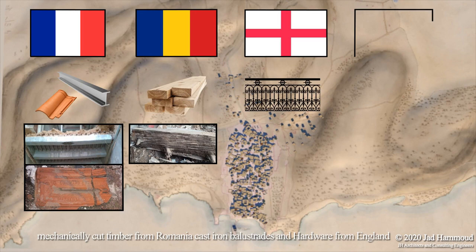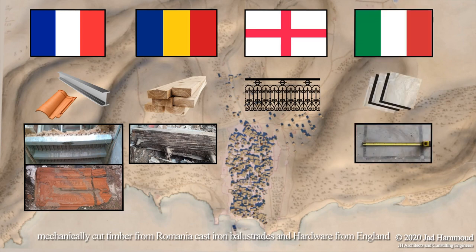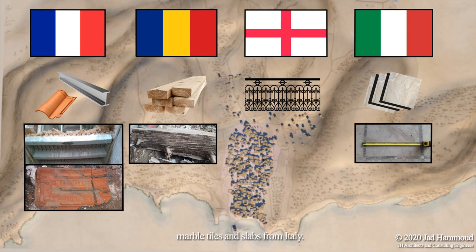Wrought iron I-beams and roof tiles came from France; mechanically cut timber from Romania; cast iron balustrades and hardware from England; and marble tiles and slabs from Italy.